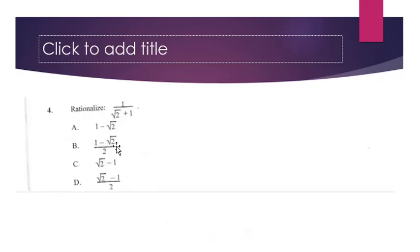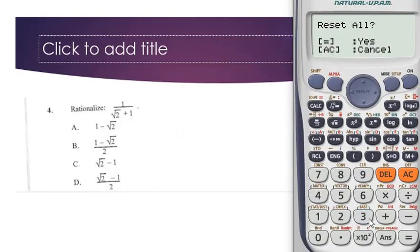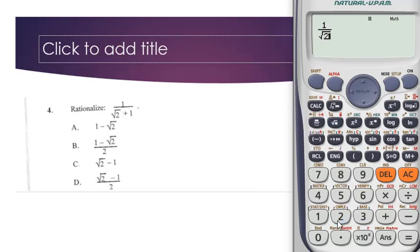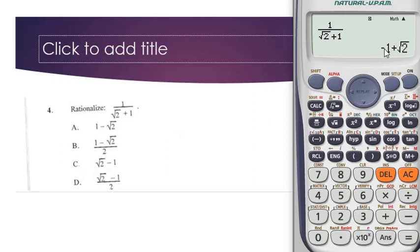Let's proceed to the next question. We have one over two plus one — that is, one over root two plus one. Click the fraction sign, punch one, click the forward arrow, punch two, click the forward arrow sign to move outside the root, then plus one. Click equals and we get negative one plus root two. Checking the options, the answer is C: root two minus one — it's the same thing, just written in reverse order.